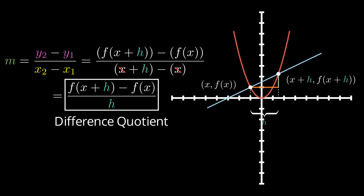Now you may ask why we did all this just to land another way to represent our slope formula. As it stands, if we plugged in our h and our x into this difference quotient formula, this would be another way to find the slope of this line. But remember, this is just finding the slope between these two points. When it comes to finding the derivative, we don't really want to find the slope between these two points — we want to find the slope at this one particular point. And as it stands right now, that's not what it's doing. So how would we go from here to here?